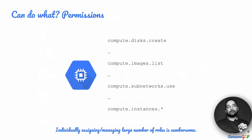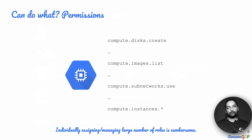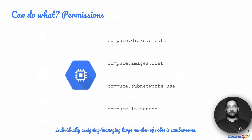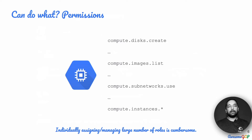The next part is: what can they do? This is defined in permissions. Each resource within Google Cloud has a set of permissions attached to it — for example, create disks, delete disks, list disks; similarly for images. Each such action you can perform is given as a permission. However, there are a large number of permissions, and individually assigning and managing them for every identity attached to a resource becomes too cumbersome.